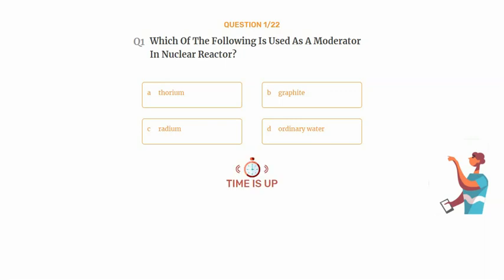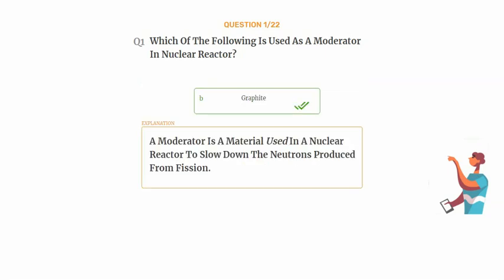The correct answer is Option B: Graphite. A moderator is a material used in a nuclear reactor to slow down the neutrons produced from fission.